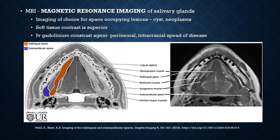Magnetic resonance imaging of salivary glands is the image of choice for space-occupying lesions such as cysts and neoplasia. The soft tissue contrast is superior, and intravenous gadolinium contrast agents are injected intravenously so that perineural and intracranial spread of disease can be observed more clearly. The images here show the normal appearance of the sublingual and submandibular spaces and glands on MRI, bilaterally.